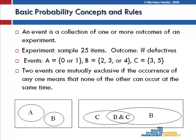An event is a collection of one or more outcomes of an experiment. An experiment could have a sample of 25 items, and the outcome could be the number of defectives. An event could be defined as zero or one defective, or two, three, or four, or three or five. Let me draw your attention to the slide to illustrate the definitions of events and outcomes.